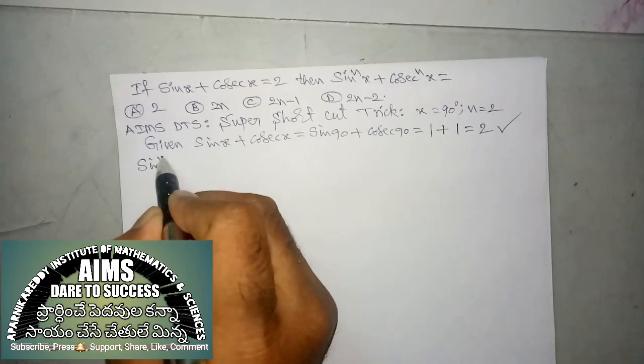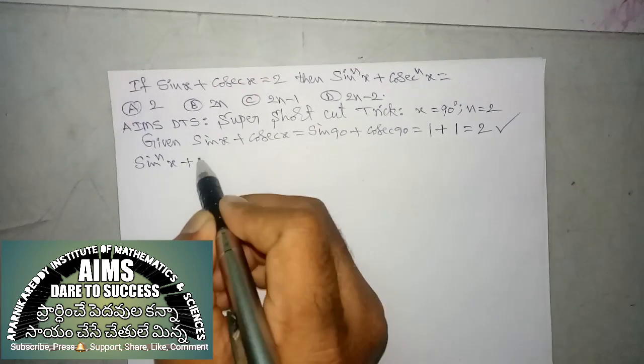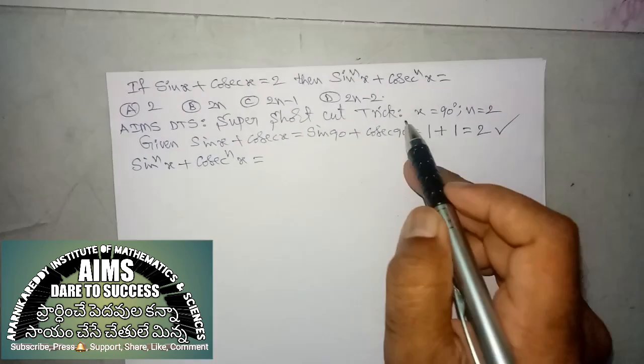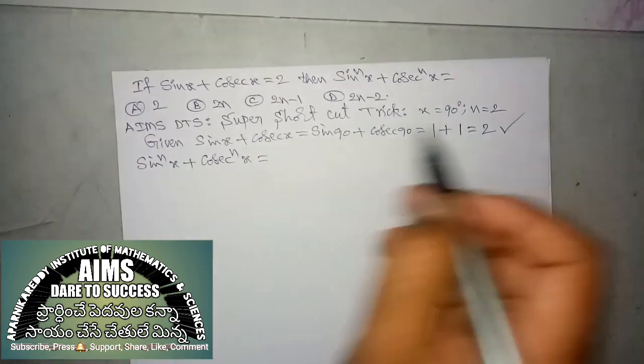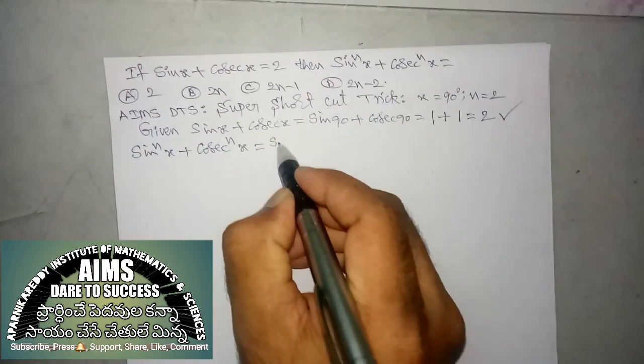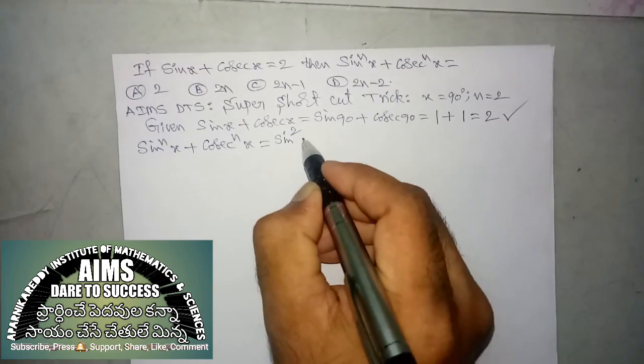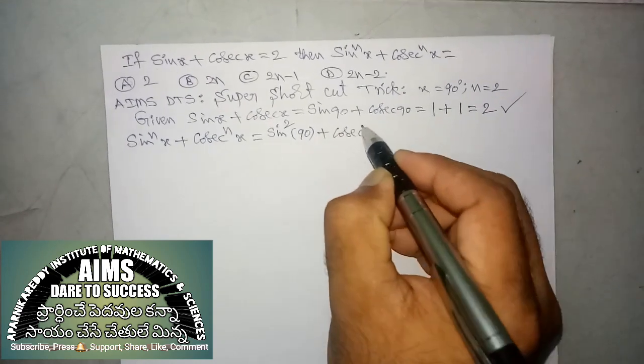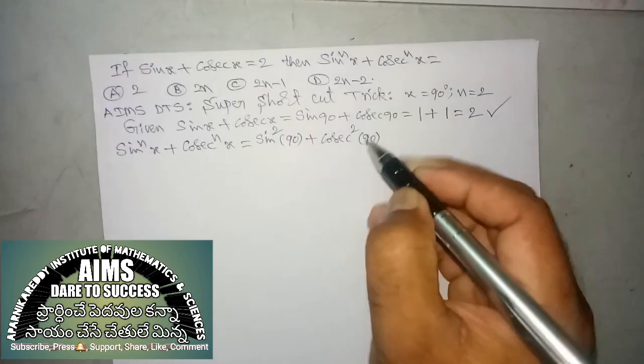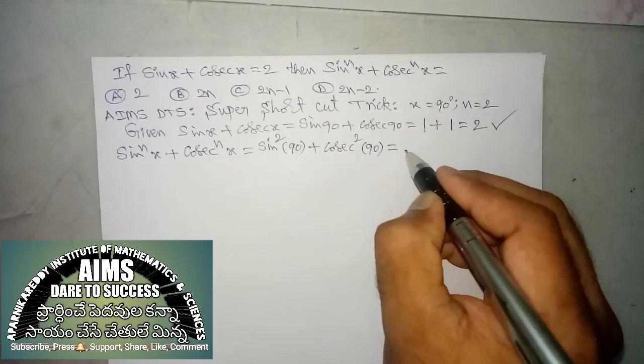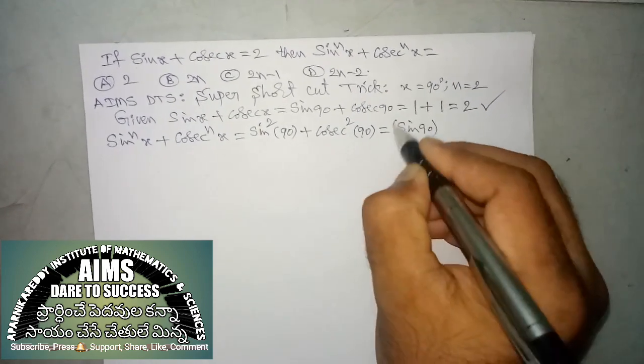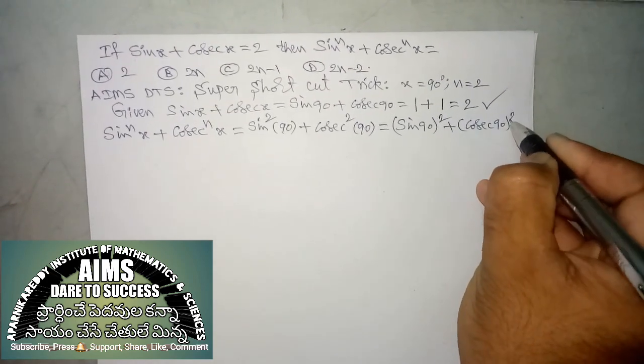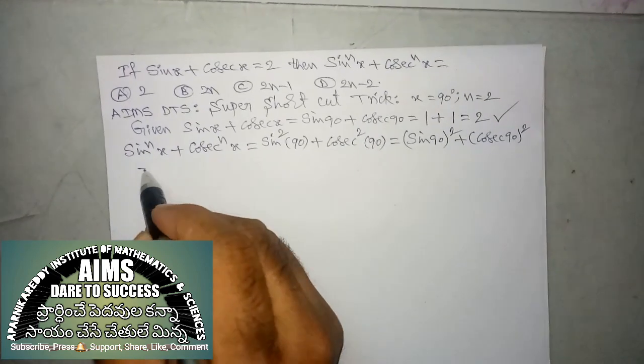So, next, we want to check the value of sin power n x plus cosecant power n x. According to shortcut, x is 90 and n is 2. So, I want to substitute sin power n is 2 into x value is 90 plus cosecant power n is 2, x value is 90. Which is also equal to,